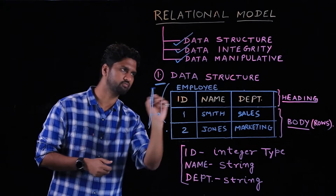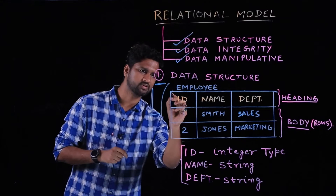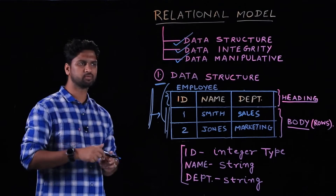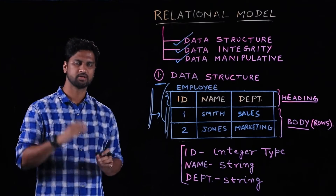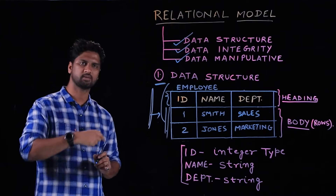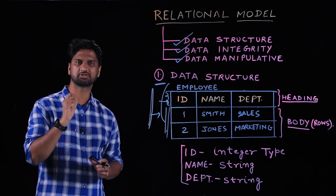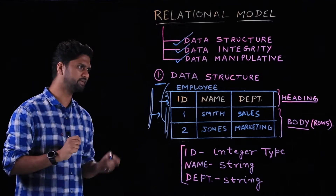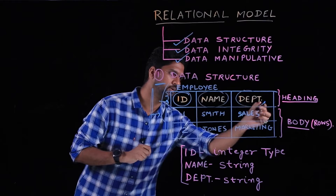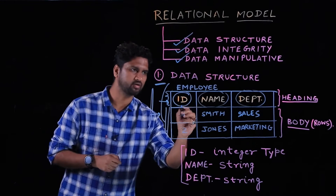This is a structure in which we store the data. If we deep dive into this structure, it basically comprises two things. The first thing you see is known as the heading — the very first row of this matrix structure, which is comprised of columns and rows, is known as the data structure heading. The heading has parts like ID, name, and department.